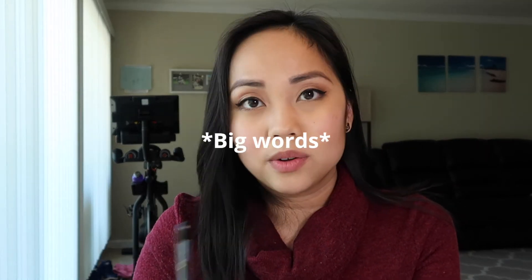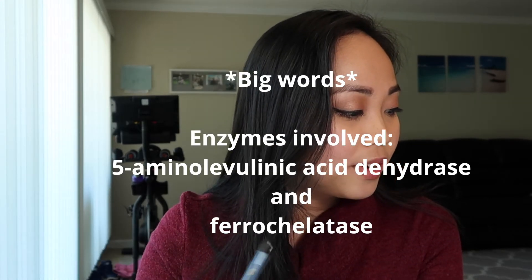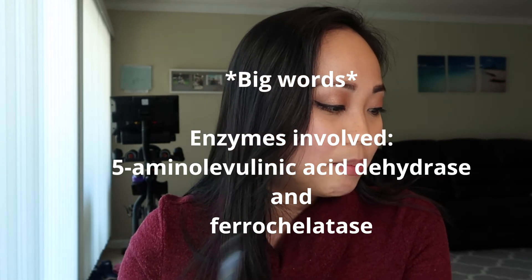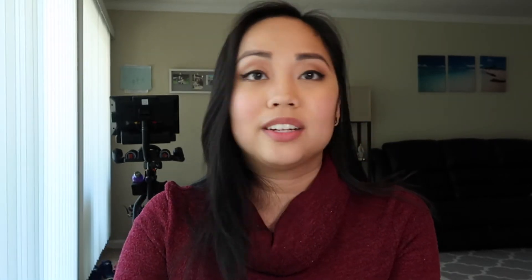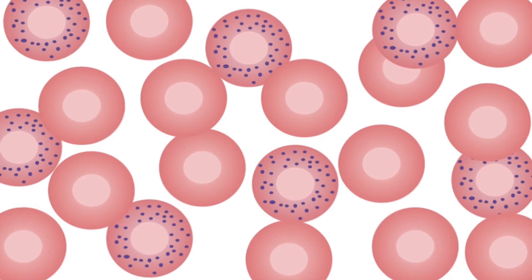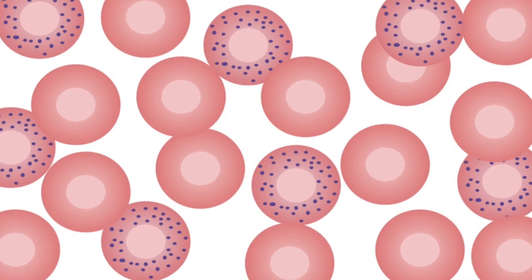Another common cause for sideroblastic anemia is lead poisoning. Lead poisoning impairs heme synthesis in multiple steps — it impairs the 5-aminolevulinic acid dehydratase and ferrochelatase. That's what lead poisoning interferes with, and that's why heme synthesis is impaired. As a result, you get coarse basophilic stippling, which is when an RBC has blue dots all over it. Coarse basophilic stippling is one of the common features of lead poisoning and always pops up on exams.